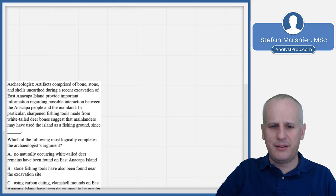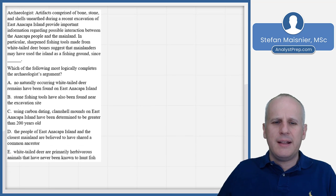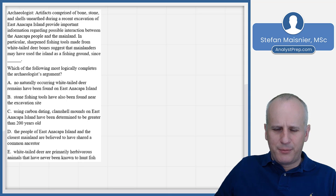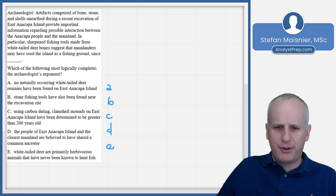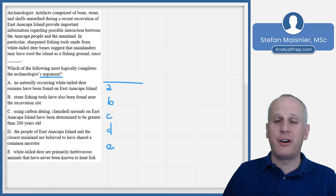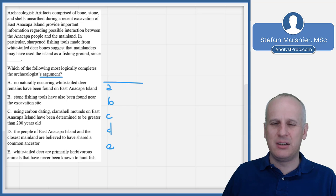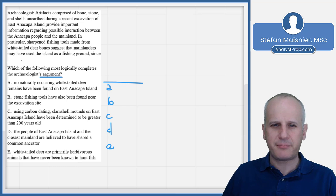Now let's look at another example. We set up our scratchpad again with answer choices A through E and a line over top. We see: 'Which of the following most logically completes the archaeologist's argument?' The word 'argument' tells us we have an argument task. We're going to read this and think about what we need to do to finish the argument based on the surrounding context.